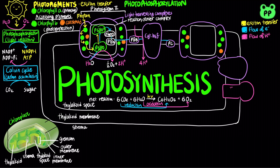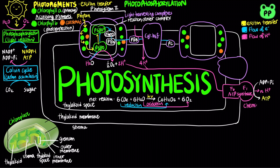This creates a proton-motive force as protons diffuse down their electrochemical gradient out of the thylakoid space, which is coupled to ATP synthesis by ATP synthase in a process known as chemiosmosis.